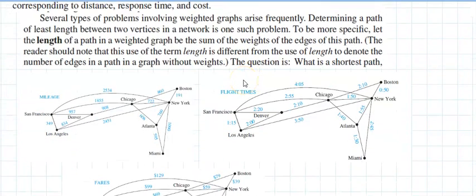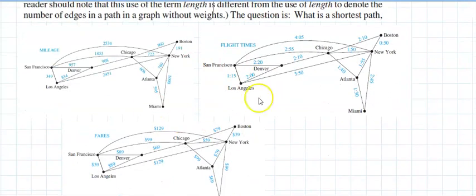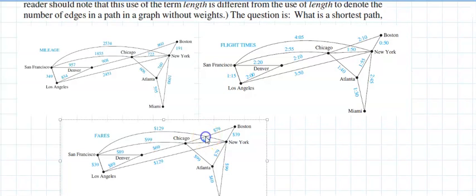Several types of problems involving weighted graphs arise frequently. Determining a path of least length between two vertices in a network is one such problem. To be more specific, let the length of a path in a weighted graph be the sum of the weights of the edges of that path. They should note that this use of the term length is different from using length to denote the number of edges in a path without weights. We want the least weight, not the least number of edges. We're going to study three: one talks about mileage between cities, one talks about time, and one talks about cost.